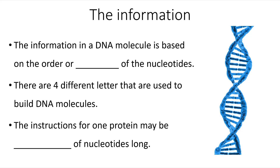The information in a DNA molecule is based on the order or sequence of the nucleotides. There are four different letters that are used to build DNA molecules, and the instructions for one protein may be thousands of nucleotides long.